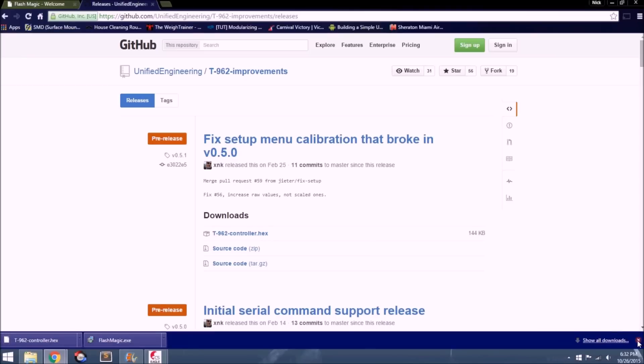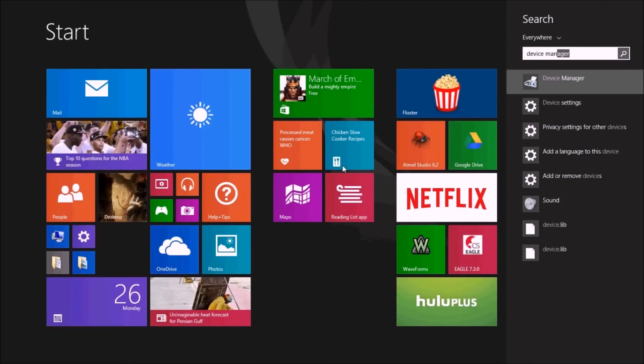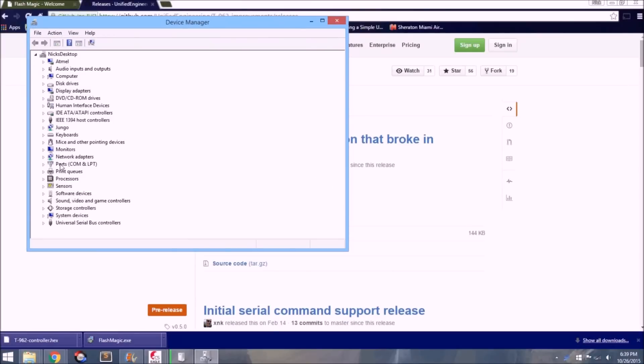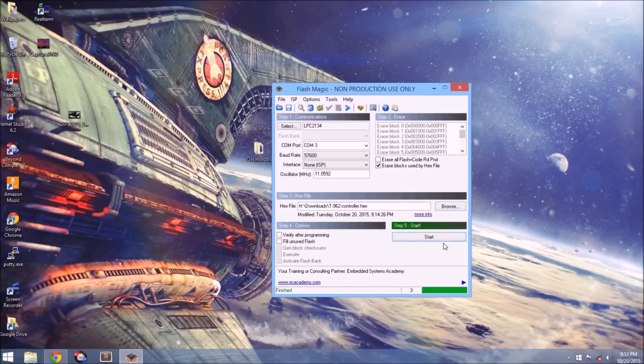When you finally launch FlashMagic, plug in the programmer to your PC and check your device manager to see what COM port the programmer is located on. Set your COM port in FlashMagic to that port. Next, for the microcontroller, select the LPC2134. Choose a baud rate of 57600, the interface should be at None ISP, and the oscillator must be exactly 11.0592 MHz.